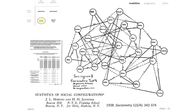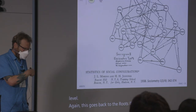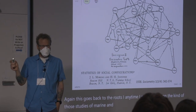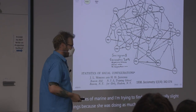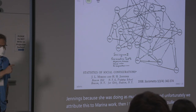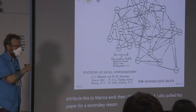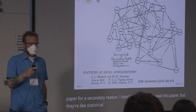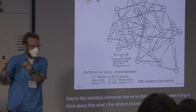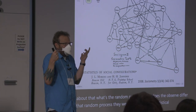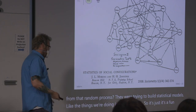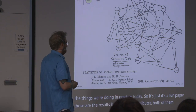Going back to the roots — I try to find papers that cite both Moreno and Jennings, because she was doing as much of the work, and unfortunately we attribute this to Moreno more than is warranted. I also pulled this paper for a secondary reason: the statistical inferences we're doing today, they were trying to think about — what's the random process? How does the observed differ from that random process? They were trying to build statistical models like the things we do in practice today. It's a fun paper on both levels.